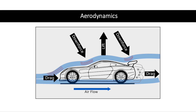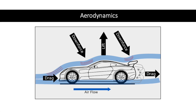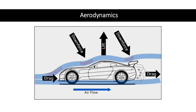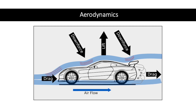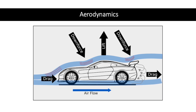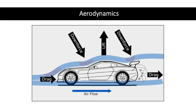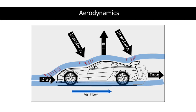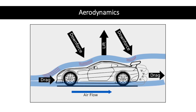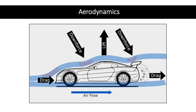Aerodynamics refers to the study of how air flows around objects. In the case of a racecar, it involves designing the car's body in such a way that it creates the least amount of drag while also generating downforce. When a car isn't moving, the air resistance can slow it down, but by reducing drag, it can increase its top speed.